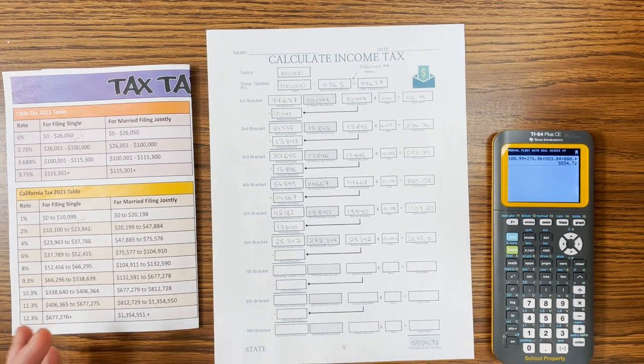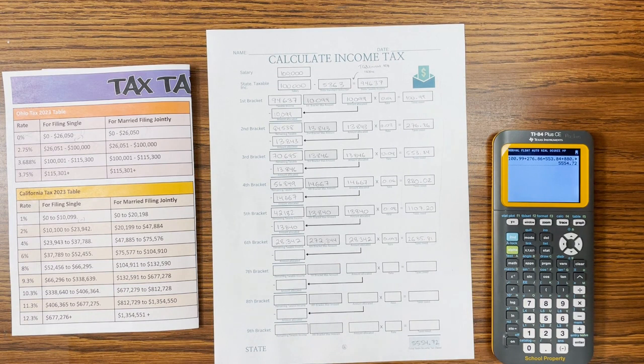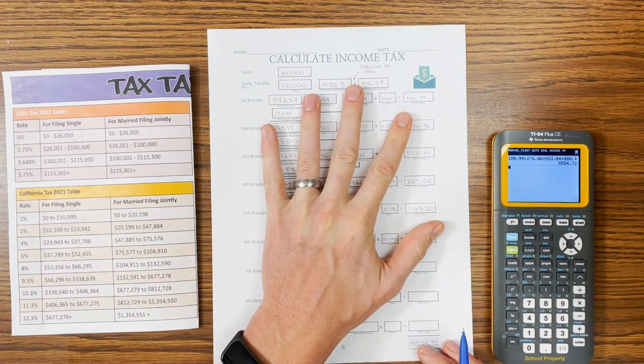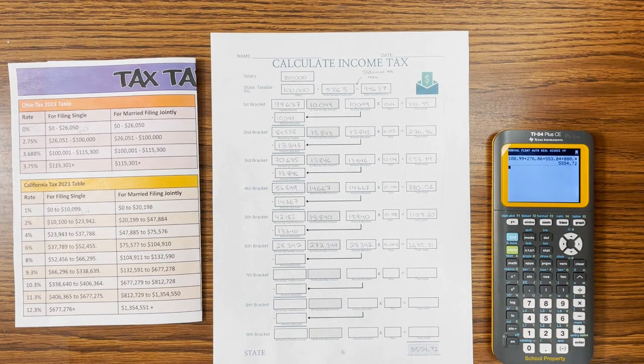All right, so that is our calculating income tax for the state of California. If you have any questions, please send them to me at thephieducator at gmail.com. You can also leave a comment on this video on YouTube. You can find this resource and the Calculate Net Pay resource on my TPT store. Go to phieducator.store and you'll be able to find those there. Thanks so much for stopping by. I'll see you next time.